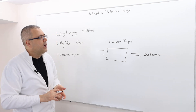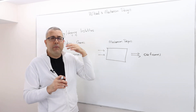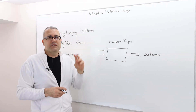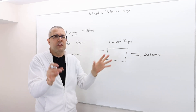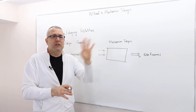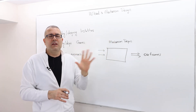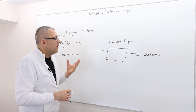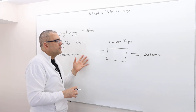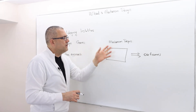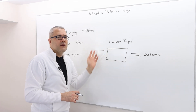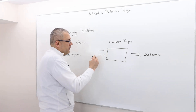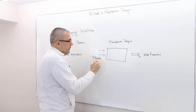So what are the inputs? Well, first off, in mechanism design we keep the players fixed — let's say we want those N players to play some game. But what is the input we need to basically run this machinery? I call it private information.